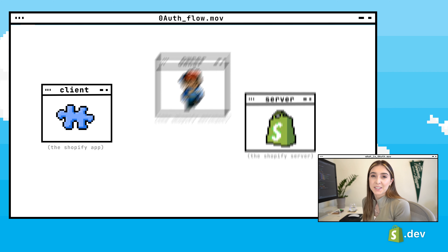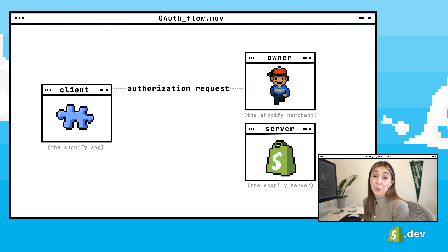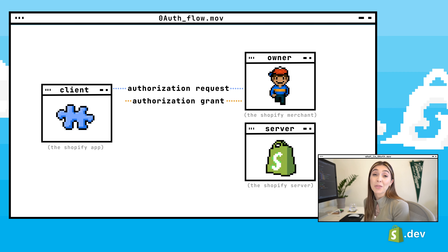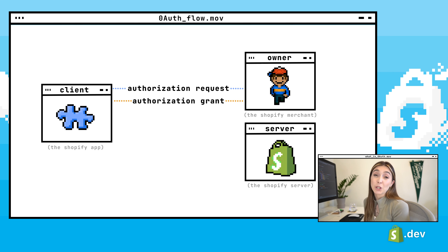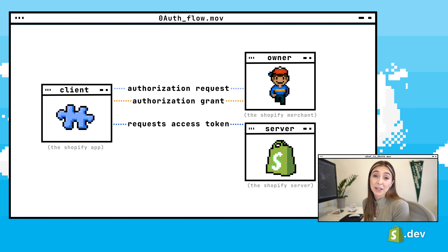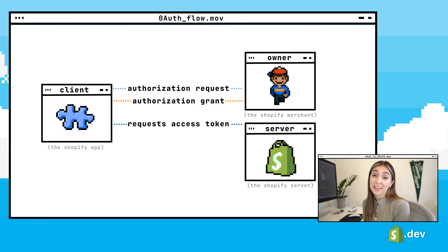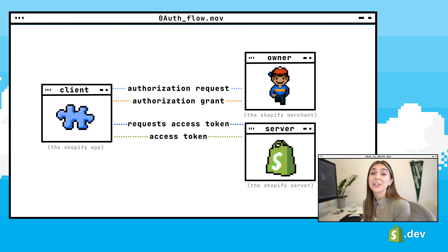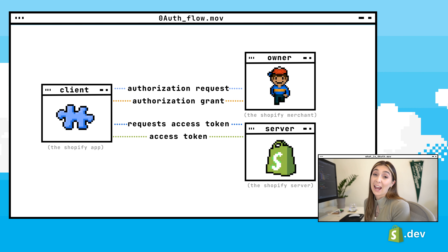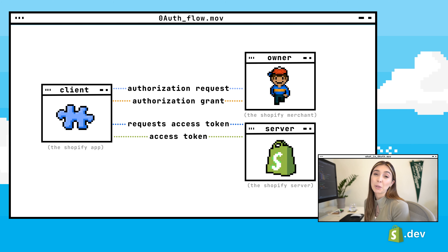The OAuth flow goes like this. Step one: the client will request authorization from the resource owner. If the resource owner accepts, the client will receive an authorization grant — a temporary credential representing the authorization. The client will then request an access token by authenticating with the resource server and presenting the authorization grant. The server will authenticate the client, validate the grant, and then issue and return an access token. Now the client or app can request protected resources and data from the resource server, and the resource server will validate the access token and return the protected resource.